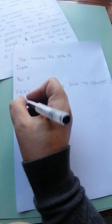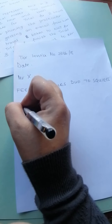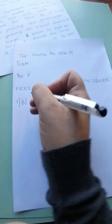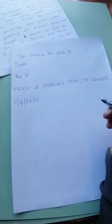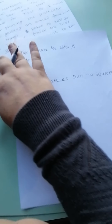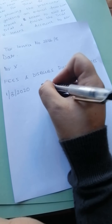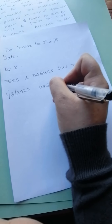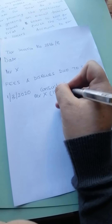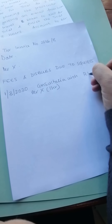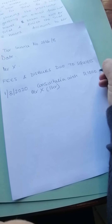Then you're going to start with a date — let's say the 1st of March 2020. It says you consult for one hour. So we'll write: consultation with Mr. X, one hour. How much is that? It tells us it's a thousand rand.